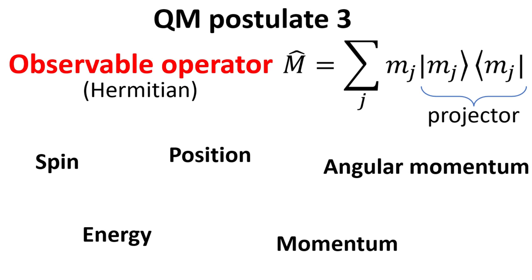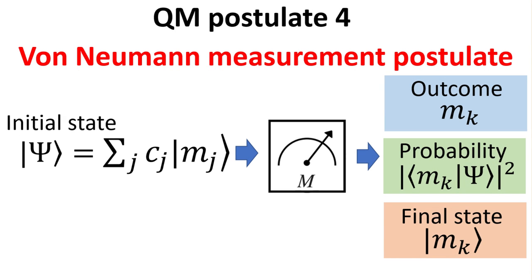The next postulate involves measurement and is also called the von Neumann measurement postulate. Measurement always involves a piece of macroscopic equipment which behaves according to the laws of classical physics. The possible outcomes are given by the eigenvalues of the observable operator, or also called the measurement operator M. The probability of obtaining the measurement outcome of m_k is given by the expression in the green box—it's the modulus square of the projection of the initial state onto the eigenstate m_k.